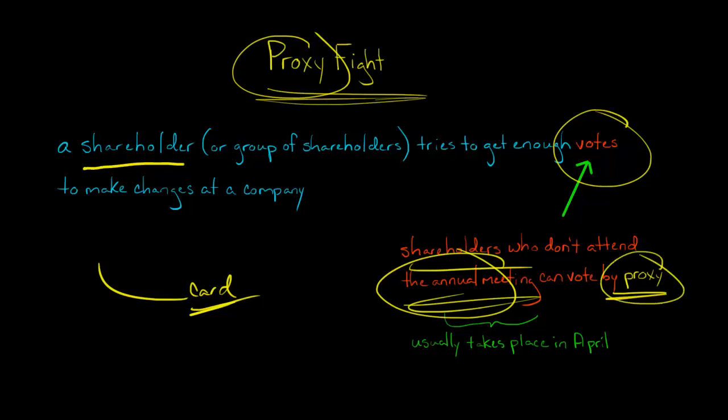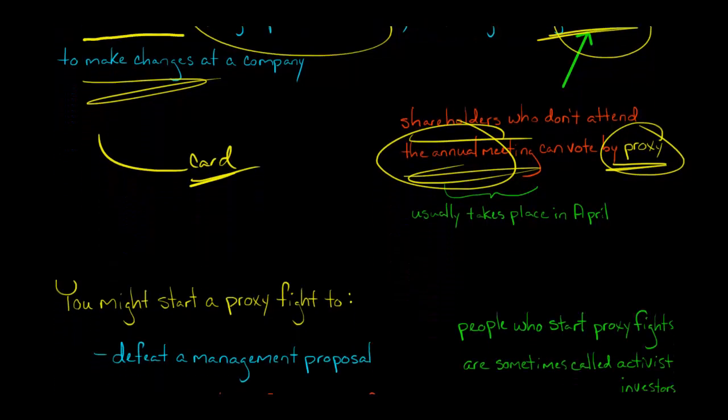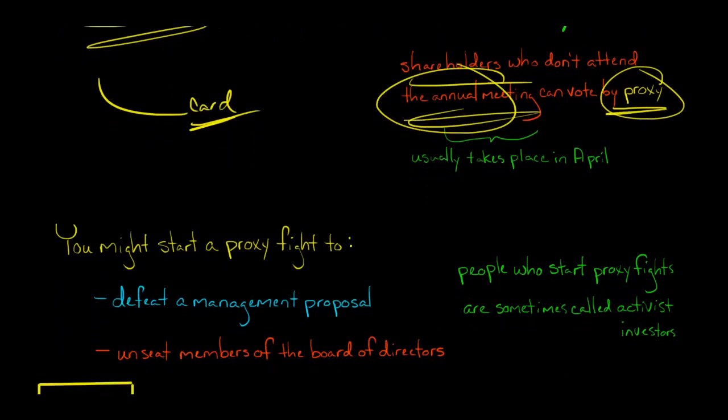So the shareholder or group of shareholders that is trying to get control and force the company to make some changes, what they're trying to do is collect enough proxies, basically trying to get enough votes to be able to force through whatever it is they want. Maybe it is that they are trying to defeat a management proposal, or it could also be that they are trying to get rid of some members of the board of directors.